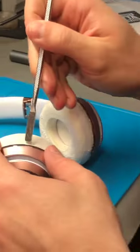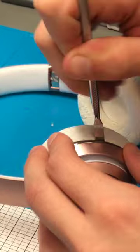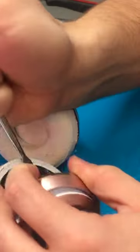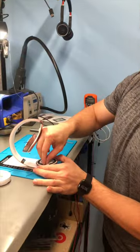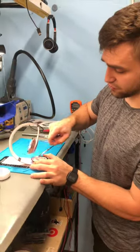Your ear pads look like this. Let's go ahead and swap them out. Grab our handy dandy pry tool and take off the old crusty ear pads. Peel off any additional adhesive from the old ear pad.